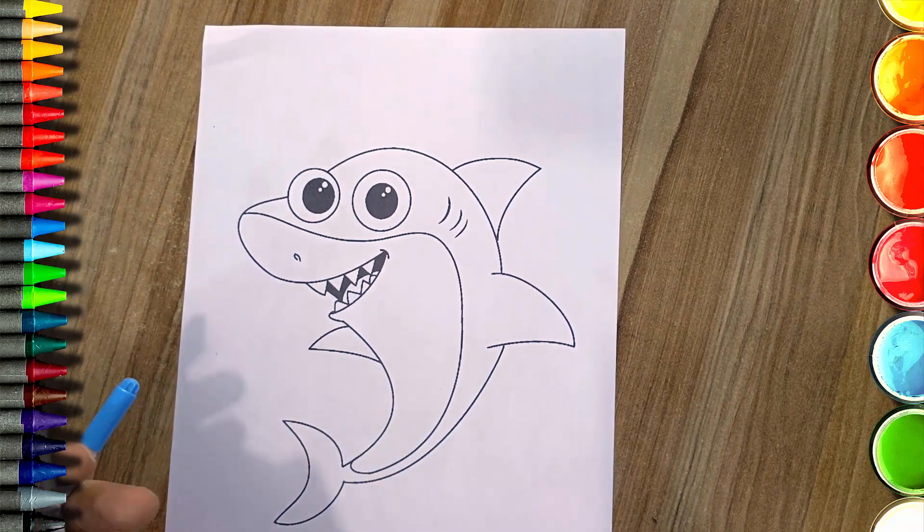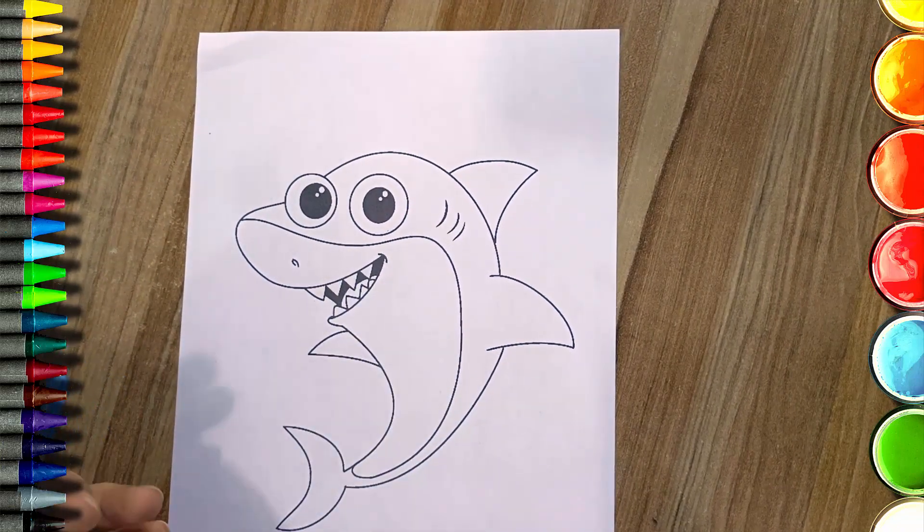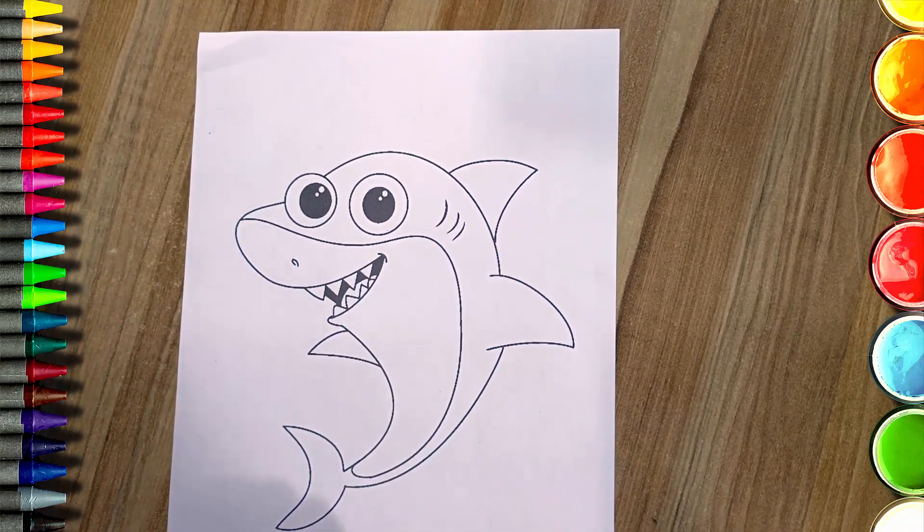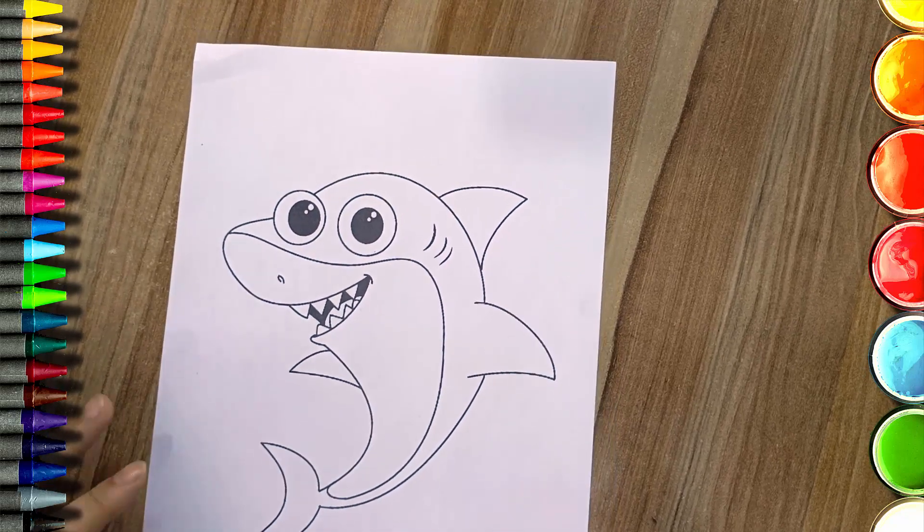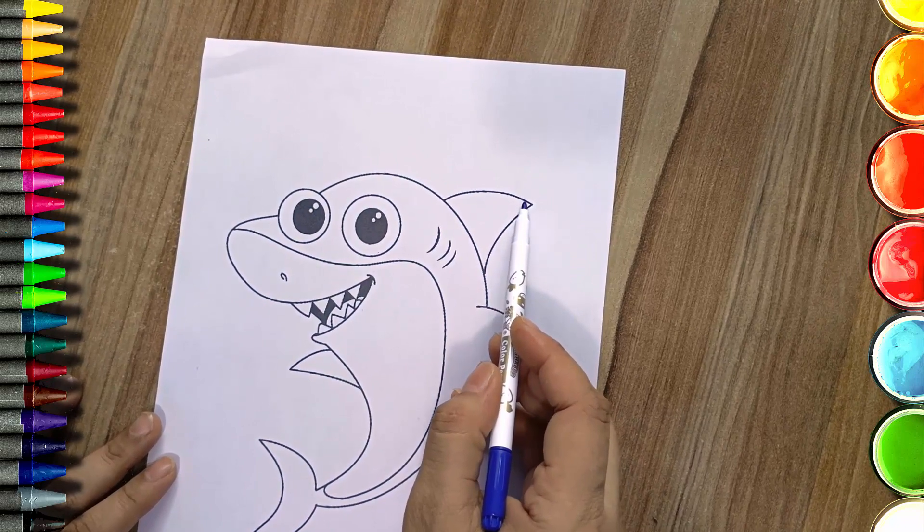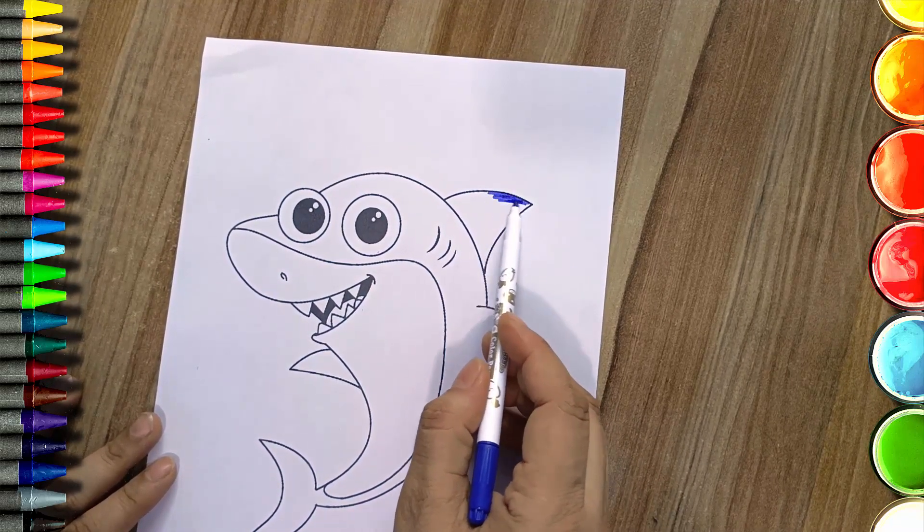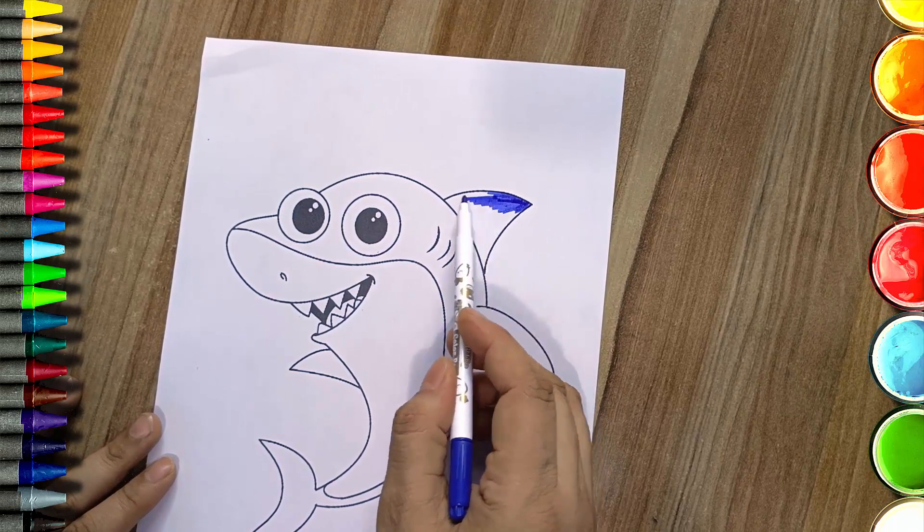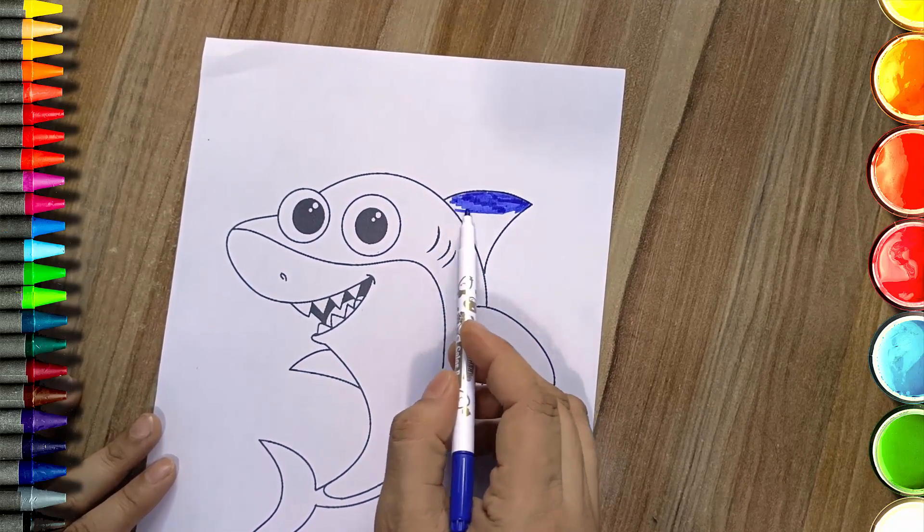We'll be using to bring out the essence of this underwater creature. We will focus on dark blue for the top part of the shark, representing the deep ocean, and a lighter shade of blue for the bottom side, capturing the shimmering waters. And of course, let's not forget the sharp teeth that will color with a vibrant yellow to make them stand out.